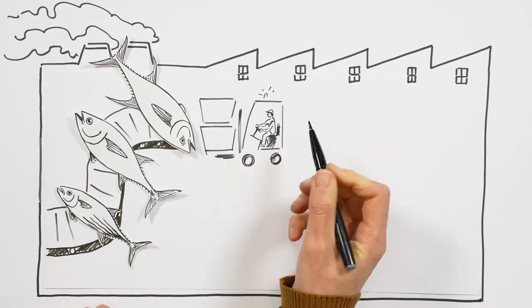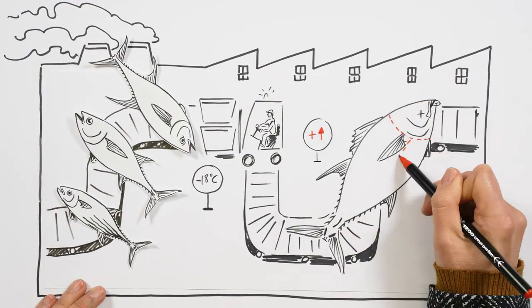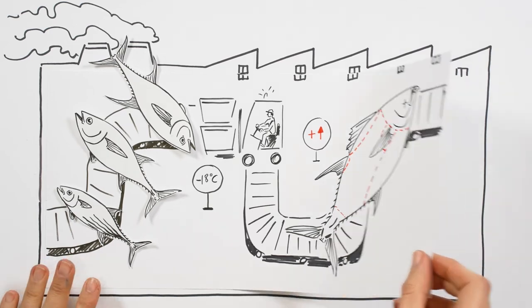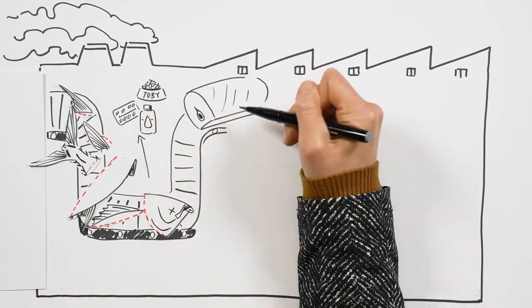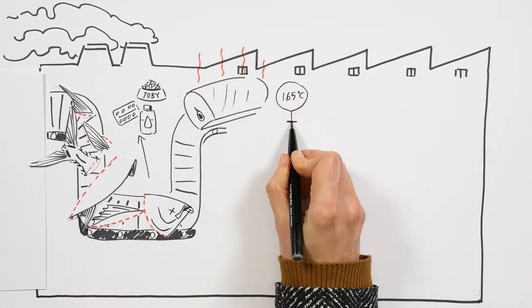Next, it's partially thawed so it can be cleaned and cut. Up to 50% of each tuna ends up in byproducts such as fish oils and fish meal. The rest, the prettiest part of the tuna, is steamed and left to cool.